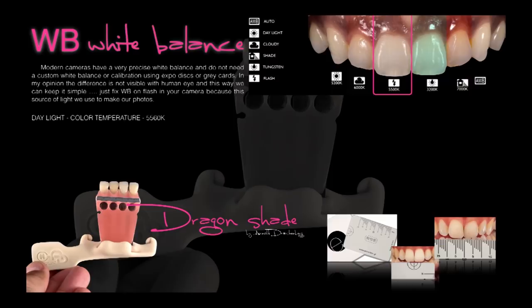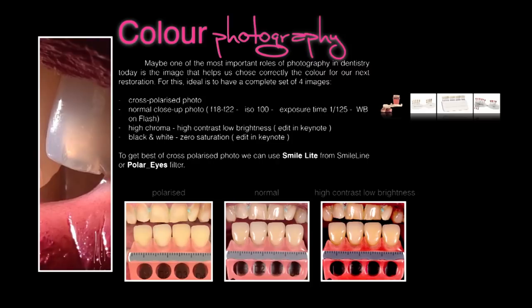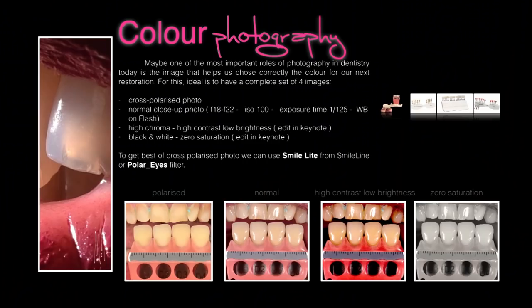For color photography we need a set of two photos: the polarized one for single crowns, and a normal photo taken with the camera. With high contrast and low brightness you can choose the chroma area where you need to add more dentin or deep dentin. And with saturation down to zero you can see the different tones of gray and the value of the color. You can duplicate the photo in Keynote and apply these adjustments to get all four views.